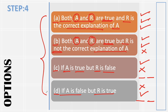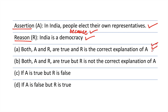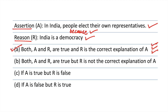अब हम इस same question को अपने इन सारे steps लगा के attempt करते हैं. Our assertion says: 'In India, people elect their own representatives.' — ये हमें सही लगता है. Step 2: 'India is a democracy.' — ये हमें सही लगता है. अब because लगा देंगे: 'In India, people elect their own representatives because India is a democracy.' — हमें ये भी सही लग रहा है. तो जो हमारा first option है, तीनो टिक वाला, वो है हमारा सही जवाब for this question.